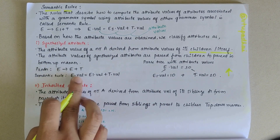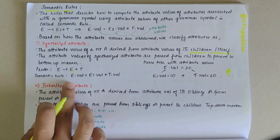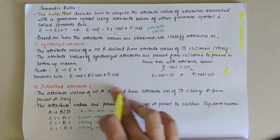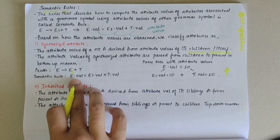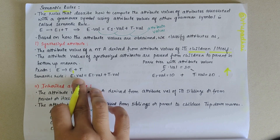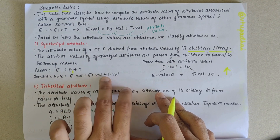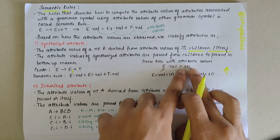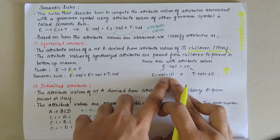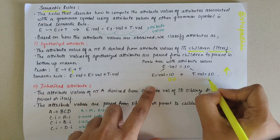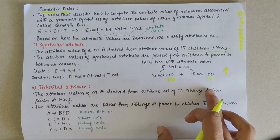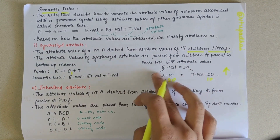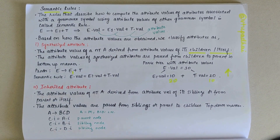Consider the production E → E1 + T with the semantic rule E.val = E1.val + T.val. If we draw the parse tree, in order to get the value of the parent attribute E, we need to add the values of E1 and T, which are the children. Suppose E.val is 30; then E1.val and T.val should be 20 and 10, or vice versa. The value here is being defined from its children's attributes — that's what synthesized attribute refers to.